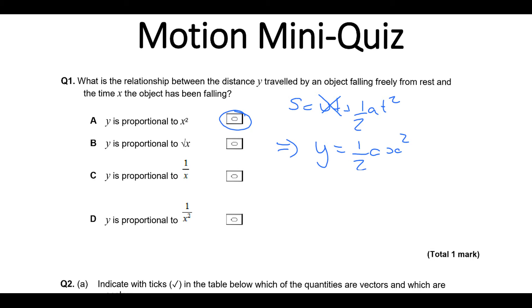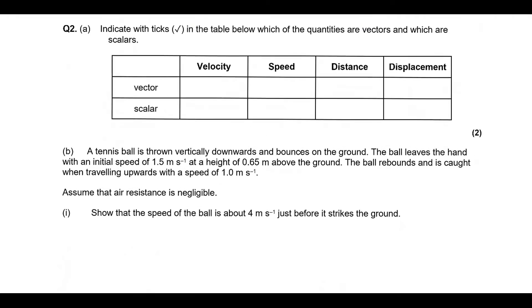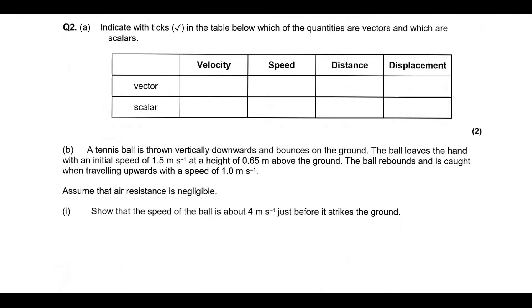Okay, so let's continue and look at the next one. So in the table below, indicate which of the quantities are vectors and which are scalars. So velocity has magnitude and direction, so it's a vector. Speed is just magnitude, distance is just magnitude, and displacement has magnitude and direction. So velocity and displacement are your vectors, speed and distance are your scalars.